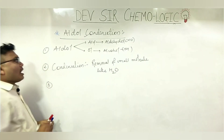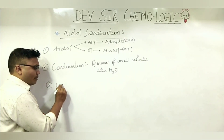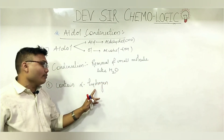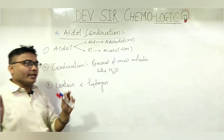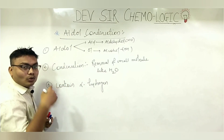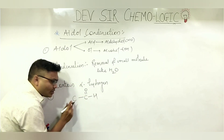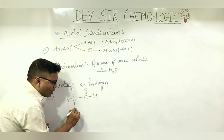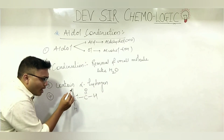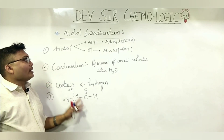Third, a very important point for aldol: aldol condensation is possible only with those aldehydes which contain alpha hydrogen. Alpha hydrogen is very important. If there is no alpha hydrogen, aldol condensation is not possible. There are 3 alpha hydrogens in this case.